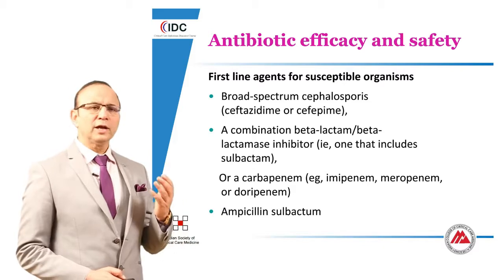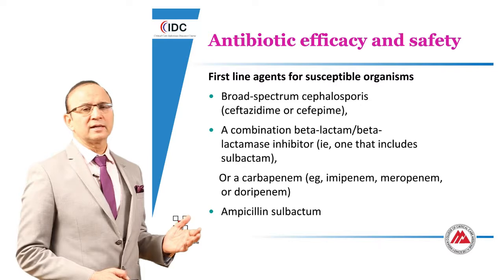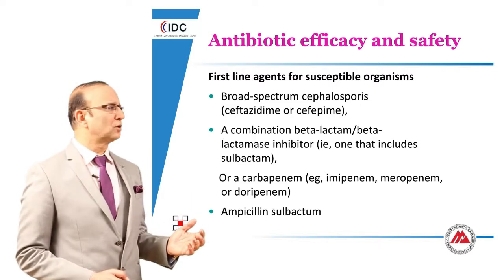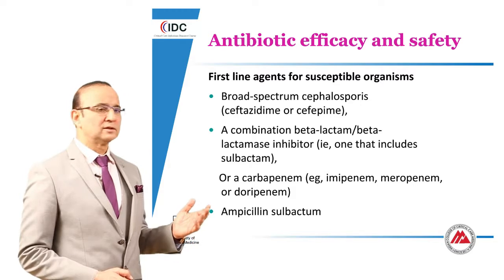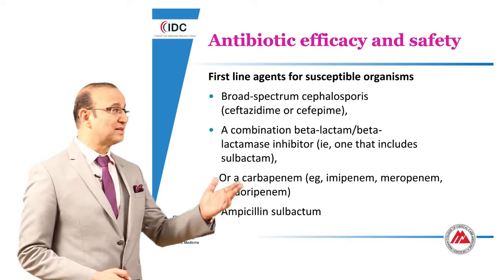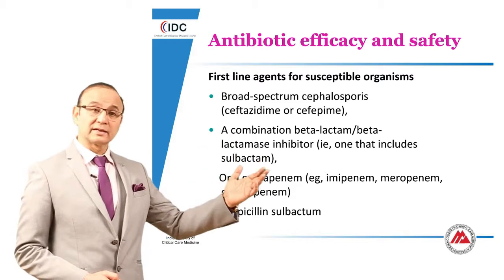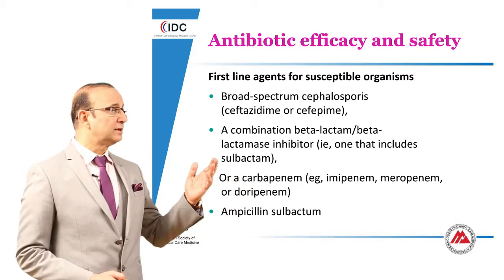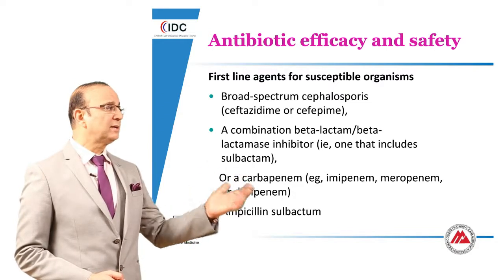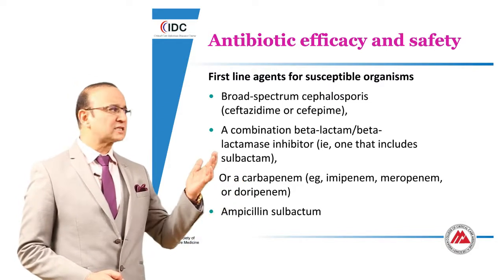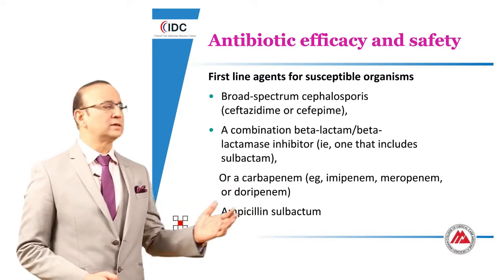If the Acinetobacter is susceptible, the first-line agents are broad-spectrum cephalosporins — third and fourth generation, like ceftazidime and cefepime — a combination of beta-lactam and beta-lactamase inhibitor, or a carbapenem such as imipenem, meropenem, or doripenem, and ampicillin-sulbactam. A susceptible Acinetobacter would be sensitive to all these antibiotics.